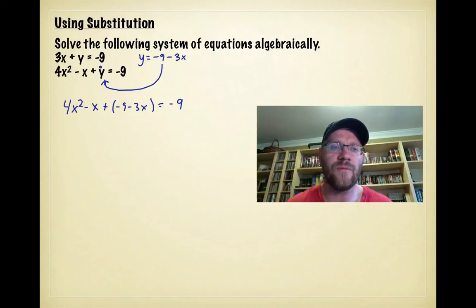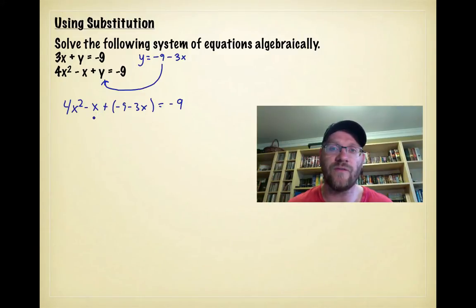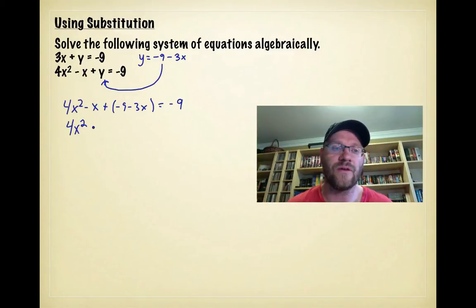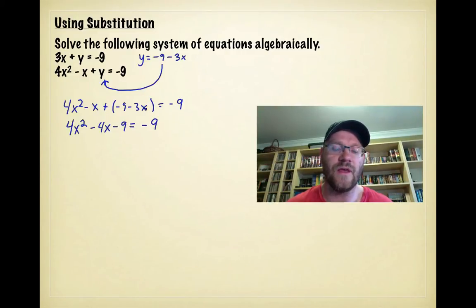I've gone from two equations with two variables — x and y — to one equation with one variable, just x. Now I can solve this equation. Because it's a quadratic, we can use factoring or the quadratic formula. Combining like terms gives 4x² − 4x − 9 = −9. Adding 9 to both sides gives 4x² − 4x = 0.